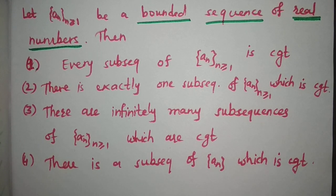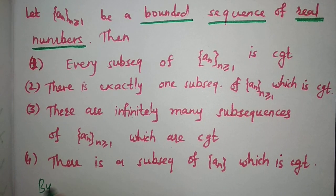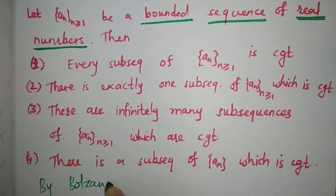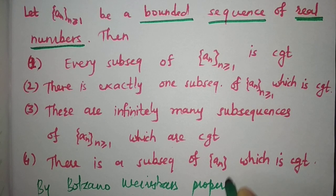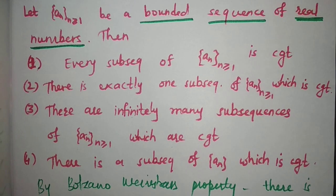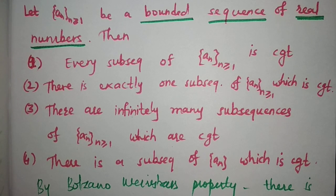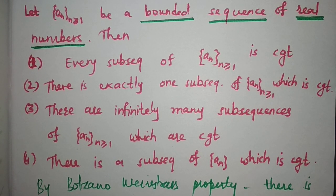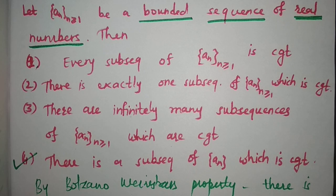Since a_n is a bounded sequence of real numbers, by the Bolzano-Weierstrass property there is a subsequence of a_n which is convergent. So the fourth option is correct.